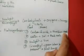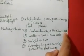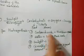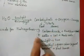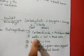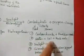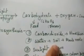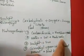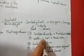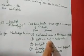Stomata are the small openings — small pores present in the leaf surface — through which carbon dioxide enters into the plant's leaves. Water is present in the soil, and the plant's roots take the water from the soil and send it to the plant leaves.